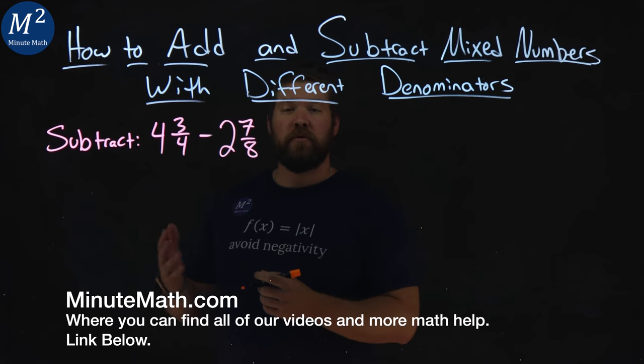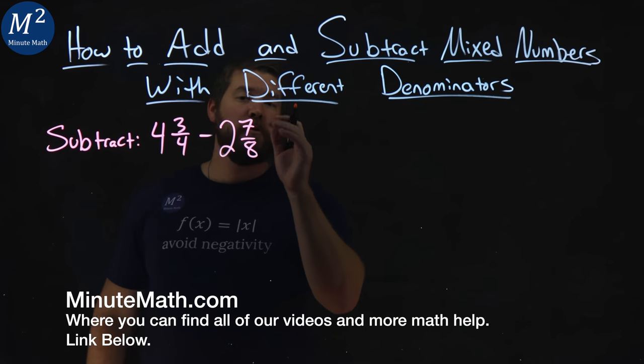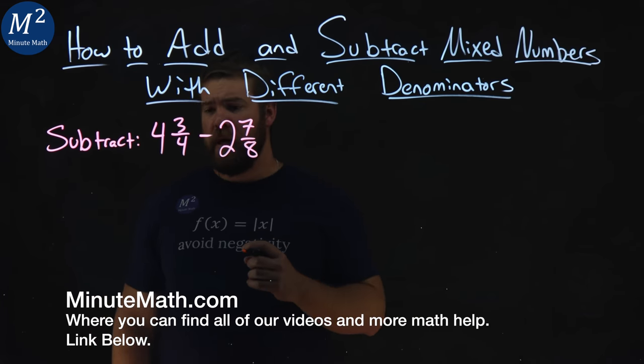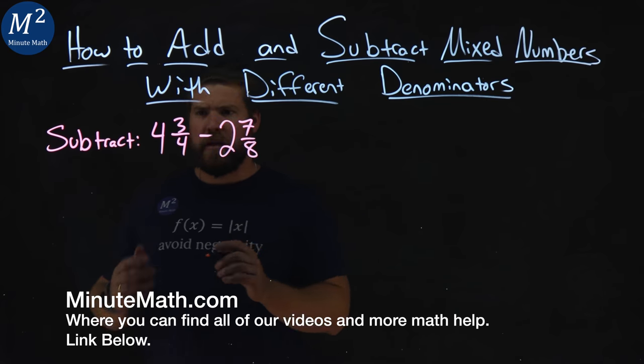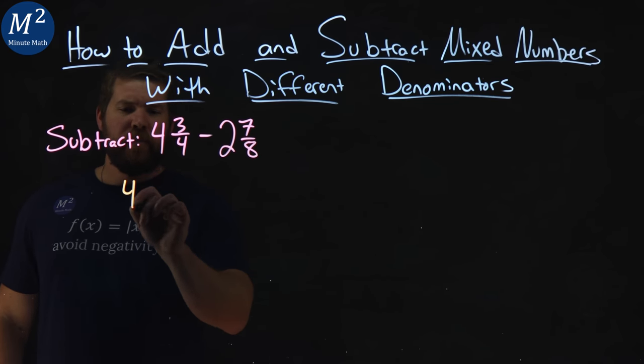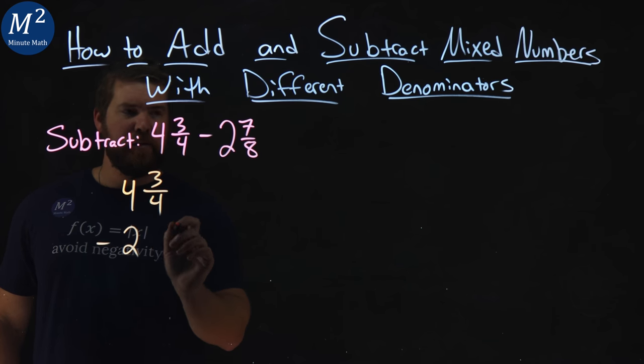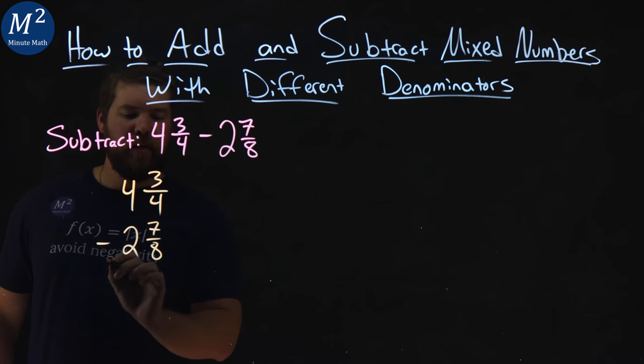We're given this problem right here: subtract 4 and 3 fourths minus 2 and 7 eighths. Let's write this vertically. We have 4 and 3 fourths minus 2 and 7 eighths.